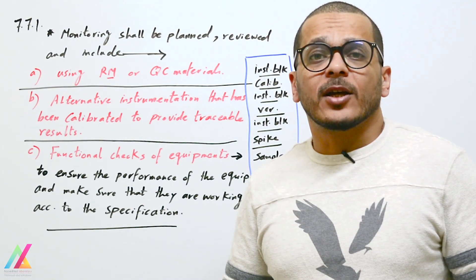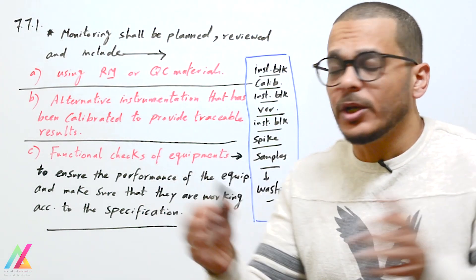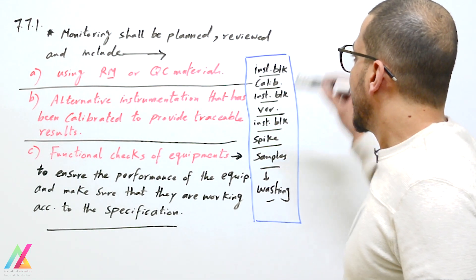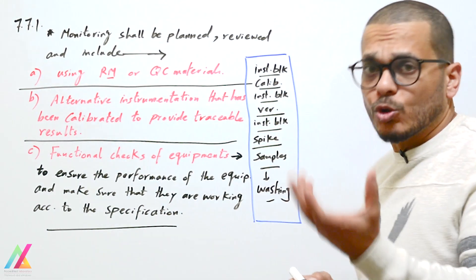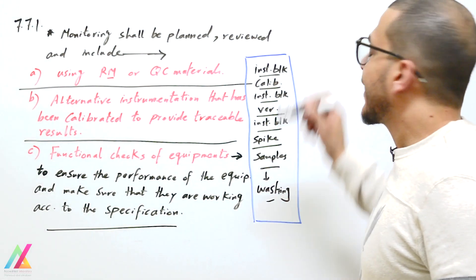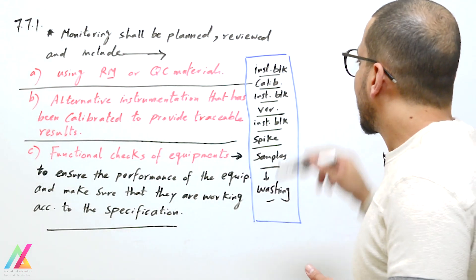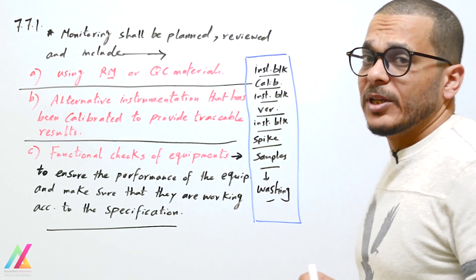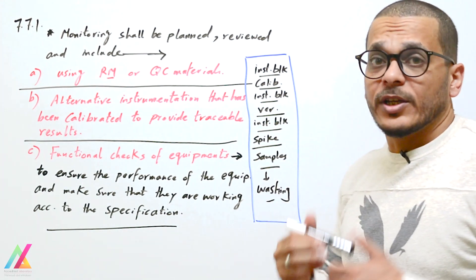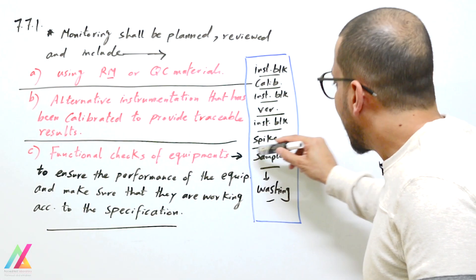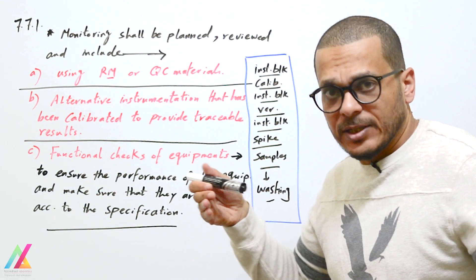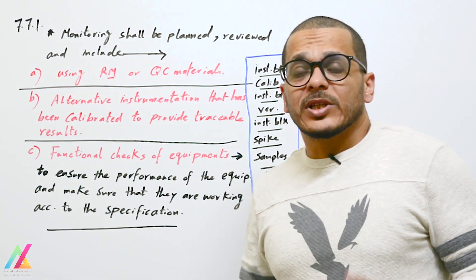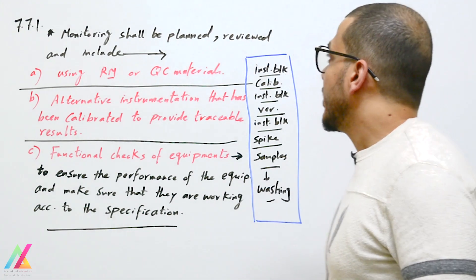A specific sequence should be applied and recorded in the procedure for monitoring the validity of results. For example: instrument blank at the beginning, solvent blank (mobile phase), calibration standards, another instrument blank, verification standard, instrument blank before the spike sample, the spike sample, instrument blank in between each sample, then all samples together. At the end of the sequence you can add a wash method for the instrument.